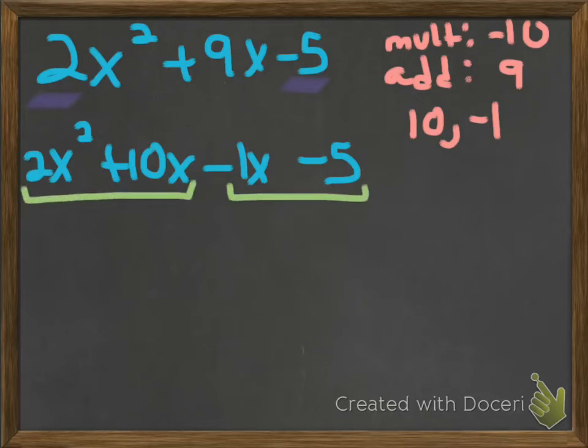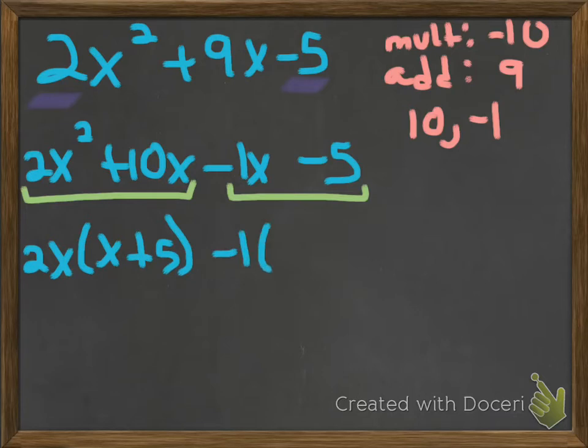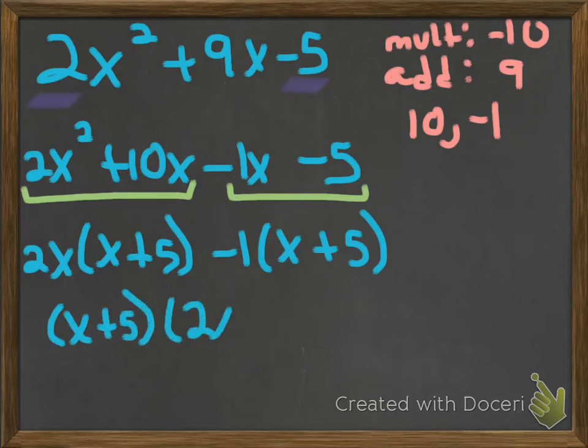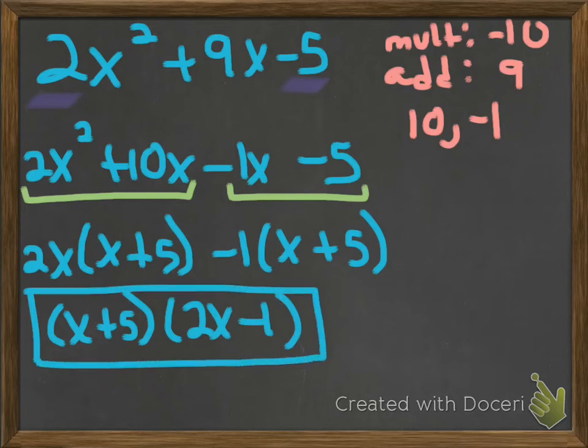Then you do factor by grouping. I'll split this into two groups and factor each one. The first one has a 2 and an x in common, leaving x plus 5. The second one has a negative 1 in common, leaving x plus 5. Now the x plus 5 is in common, and I'm left over with 2x minus 1. That is the other way to factor. It doesn't matter which method you choose; there's two ways. You get the same answer. That's how we factor. Ta-da!